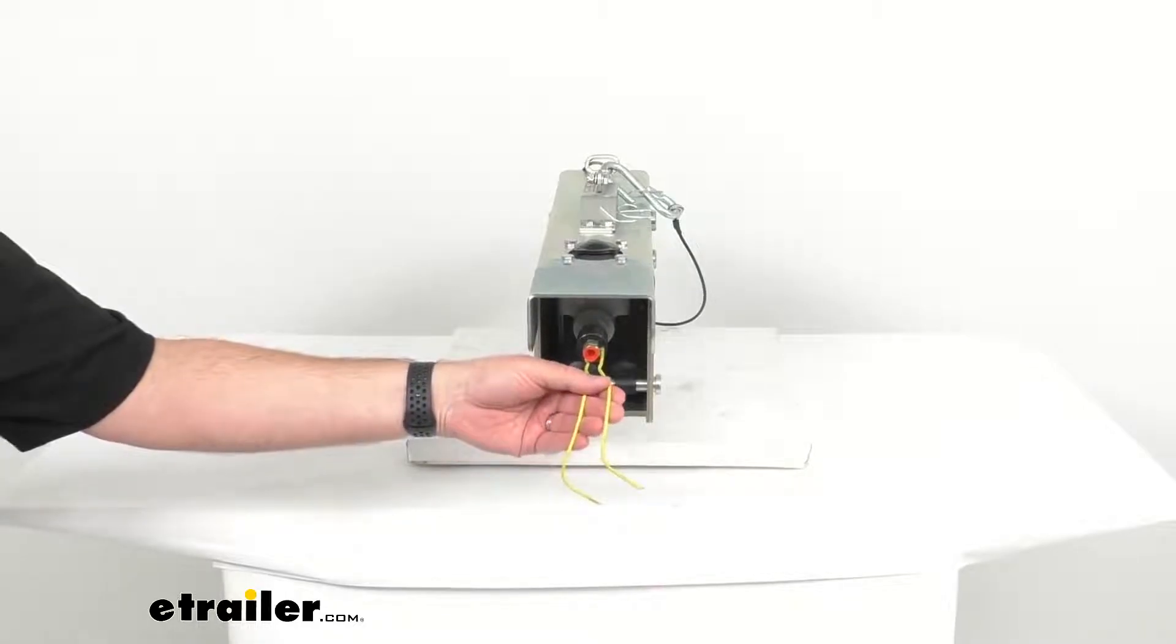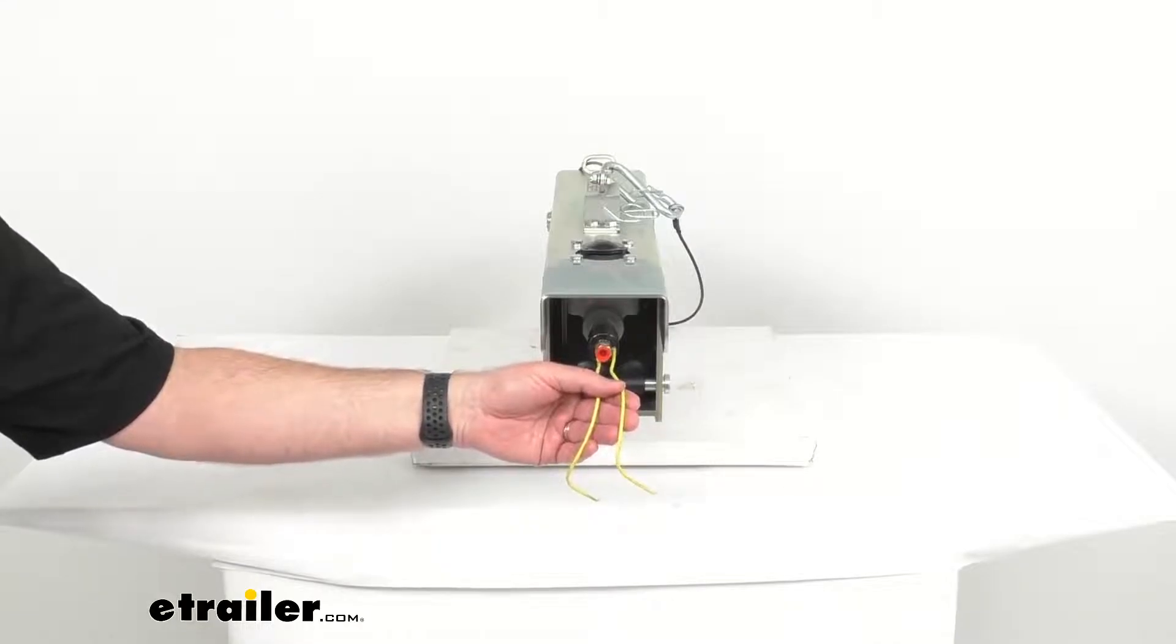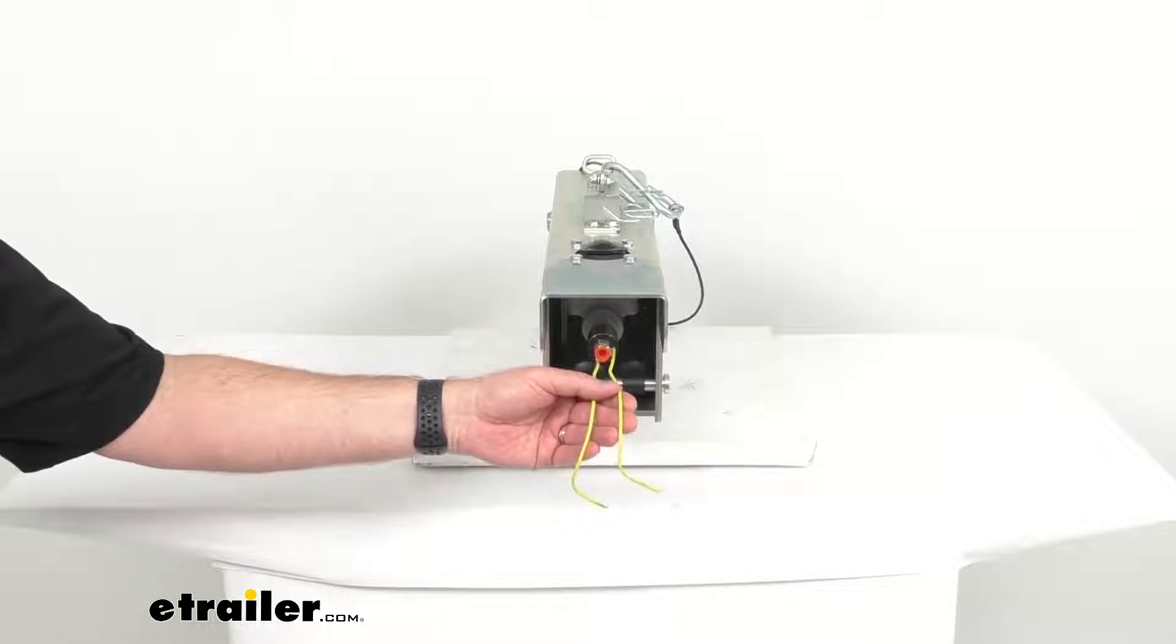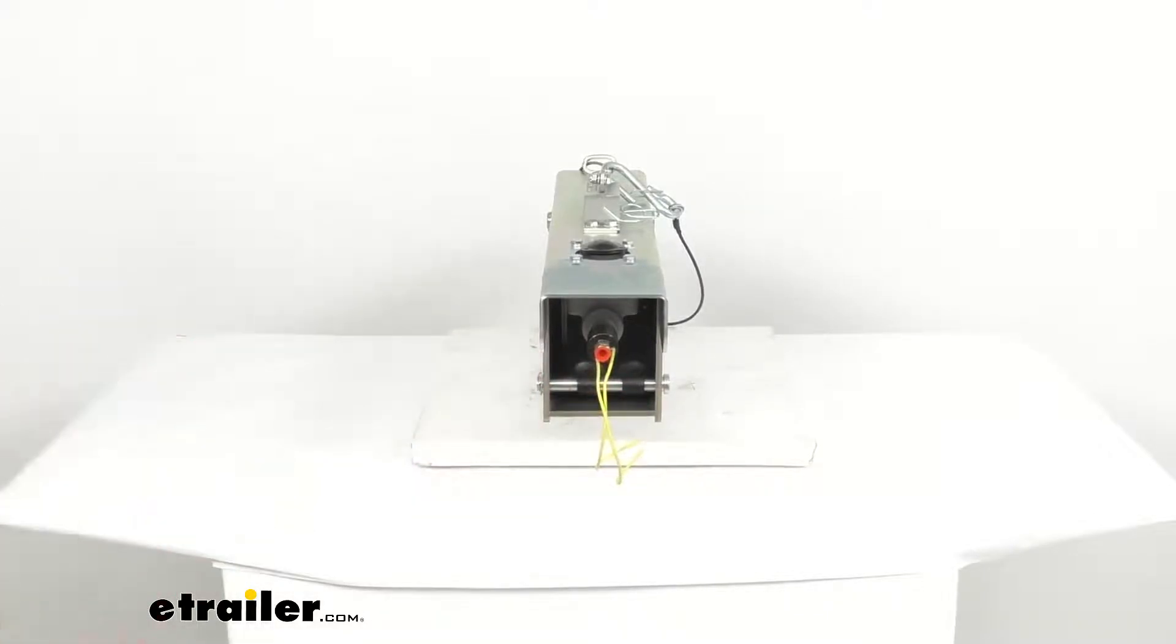If you notice it has two yellow wires here. One is going to be connected to the ground and the other goes into the reverse light circuit. Because they are both yellow it doesn't matter which one is which. To use the lockout feature you must have a 5 pole flat, 6 way round, or 7 pole trailer connector.